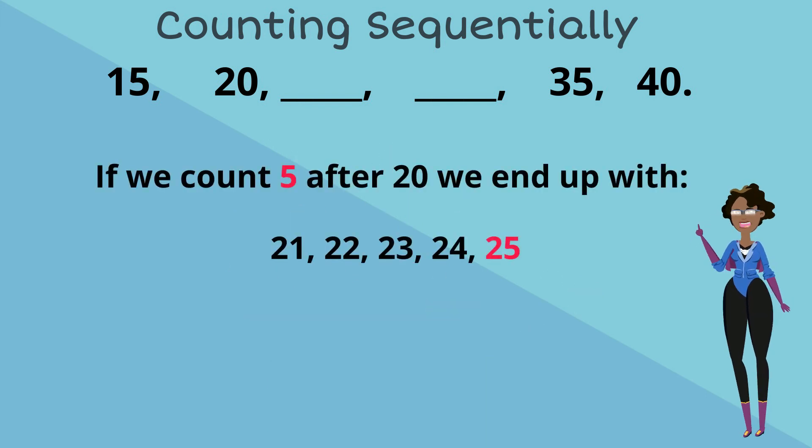If we count 5 after 20, we go 21, 22, 23, 24, 25.